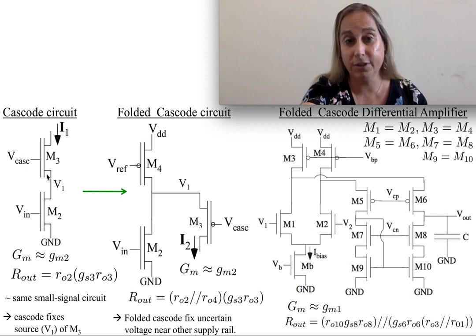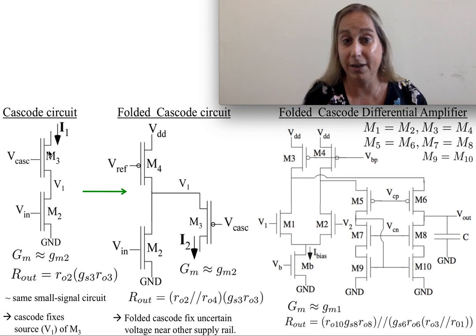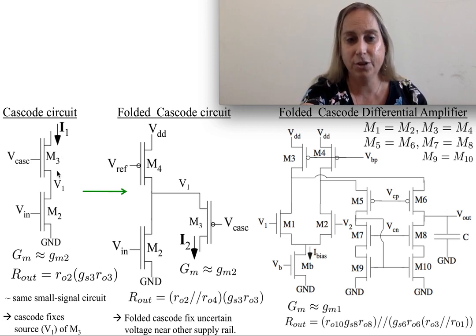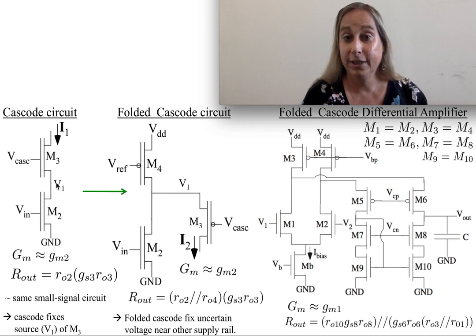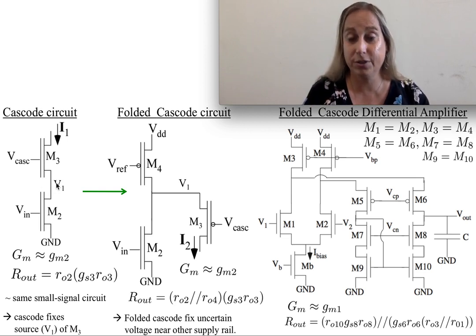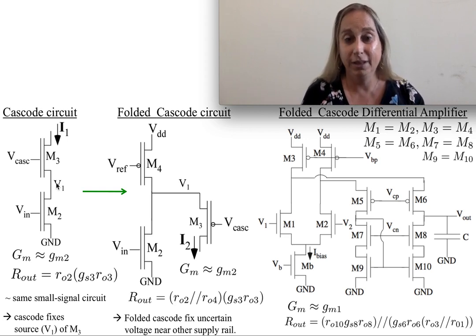Remember what the core of a cascode computation is about. This transistor M3 is cascoding M2 because it's making its source voltage, cascoding this V1 node. The whole point of a cascode is to allow that current to go through while fixing that node. Fixing that node gets you in the right framework or mindset of thinking about what you're doing here.